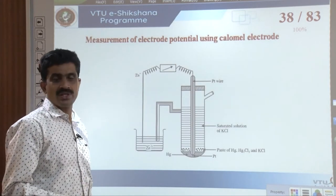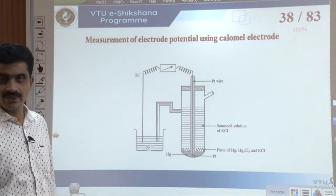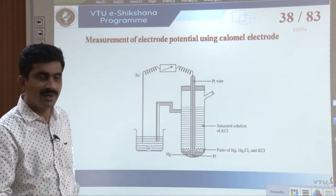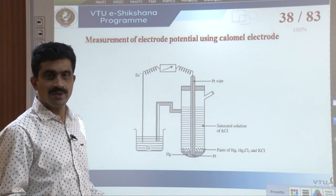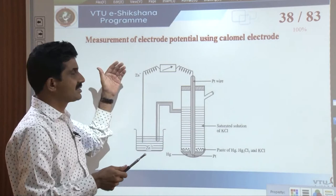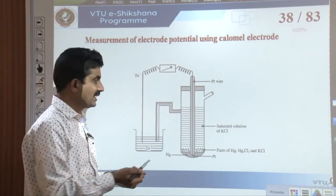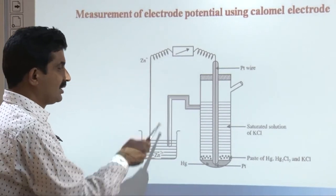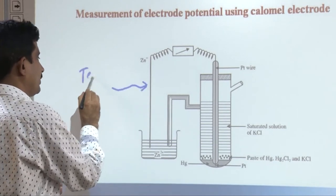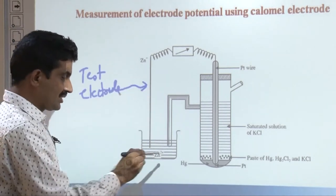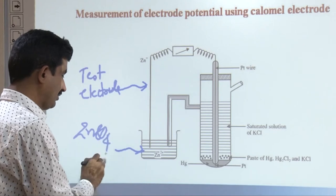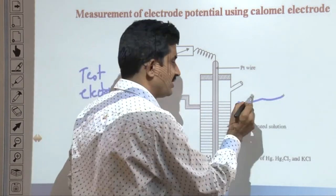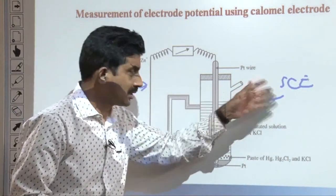How to determine the electrode potential using the calomel electrode? We connect the test electrode — say, a zinc rod dipped in zinc sulfate solution — to the saturated calomel electrode and measure the cell potential with a voltmeter. The calomel electrode's side tube, filled with saturated KCl solution, acts as the salt bridge. No additional salt bridge is required since the side tube itself is filled with saturated KCl.